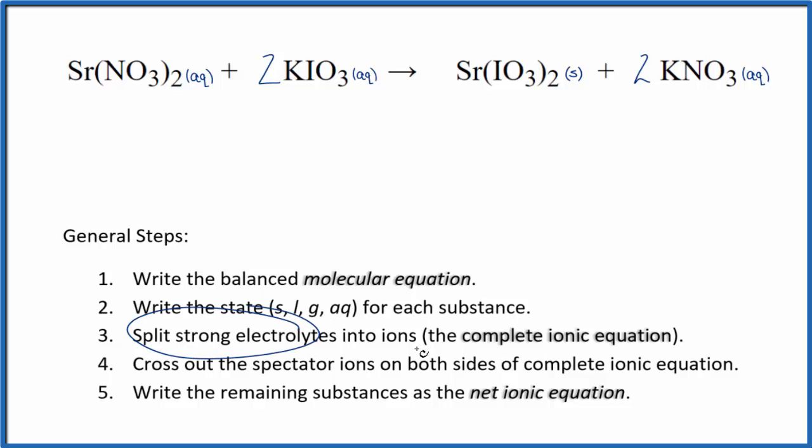So now we can split the strong electrolytes part into ions. This is going to be the complete ionic equation. Strontium iodate, we said that's slightly soluble, so we're going to call that a solid. We don't split solids apart in net ionic equations. So the complete ionic equation, that's going to look like this.